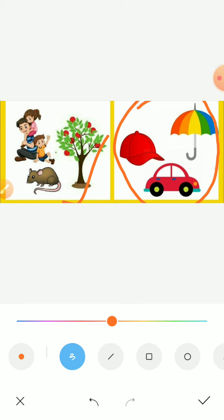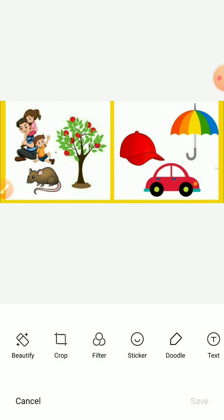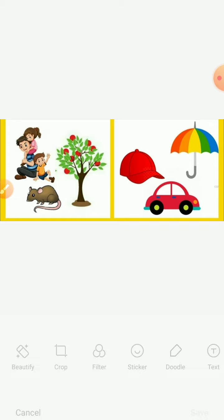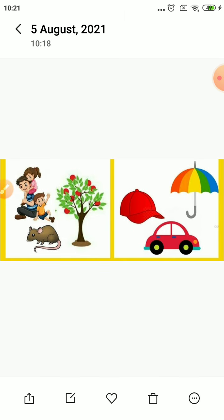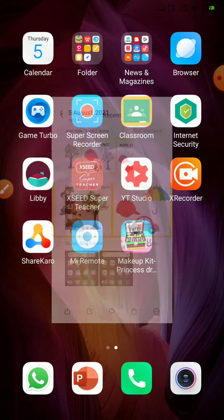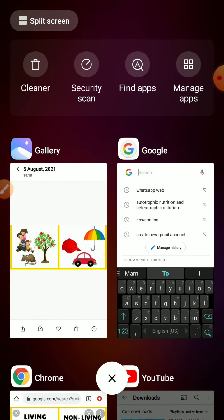The living things can grow. If you see the similarities within each group: growth, movement, and breathing are the similarities for living things, and no growth and no breathing are the similarities for non-living things. Based on these differences and similarities, we can group things. Such grouping of things into different types is called classification.